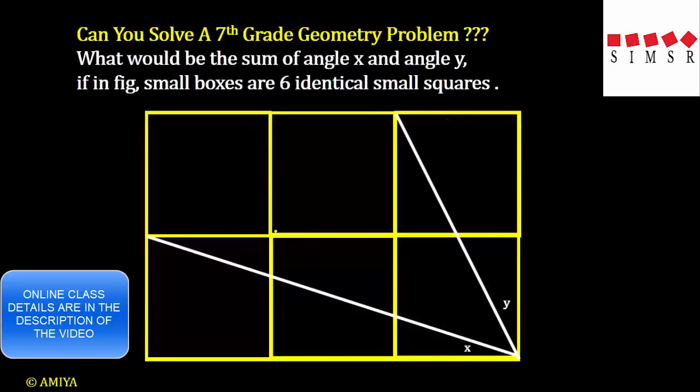So we have 6 squares. Now, you have to find the value of angle x plus angle y. If all the 6 are nothing but the small identical squares. Okay, I would say pause the video and try to solve the question. I hope you have solved the question. Definitely, you can solve the question. It is nothing but a 7th grade geometry problem. One of the easiest problems.